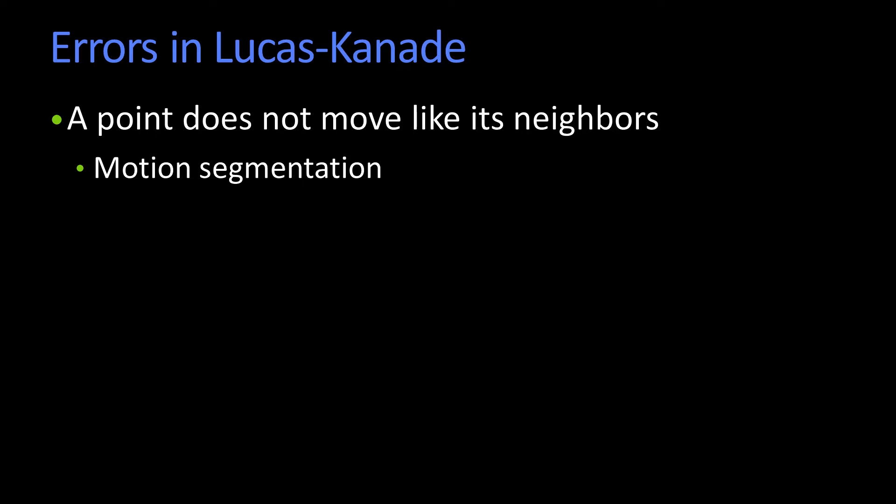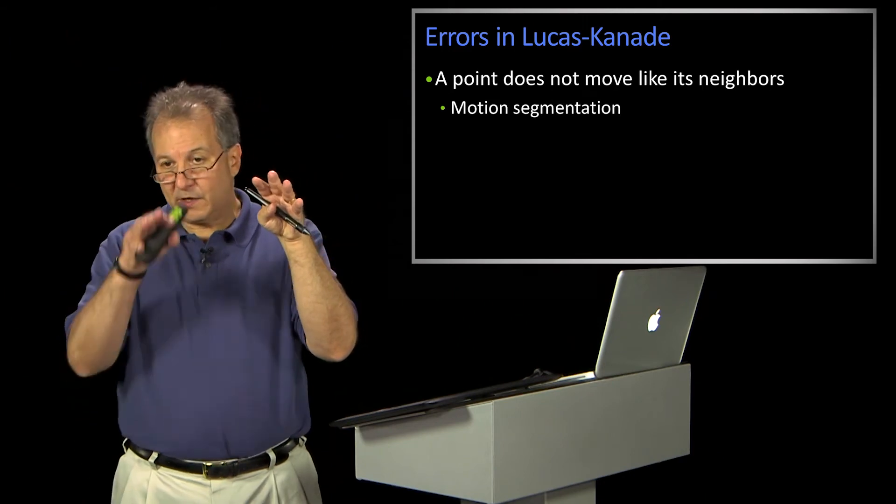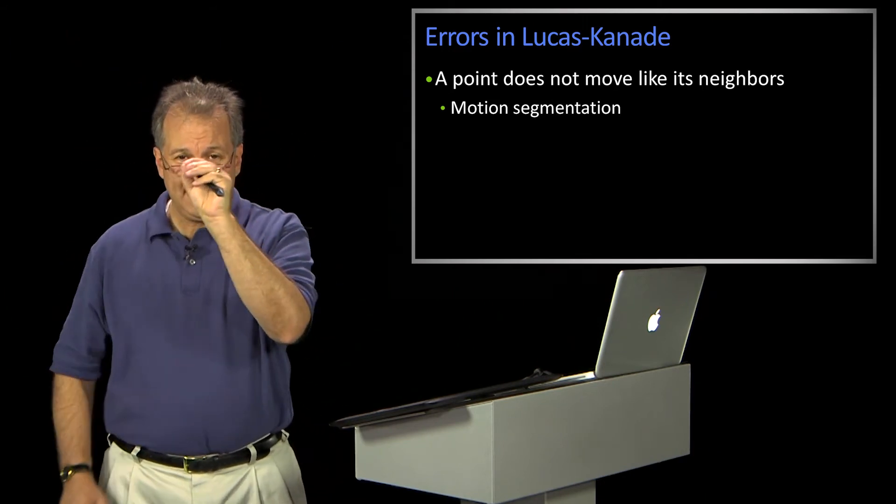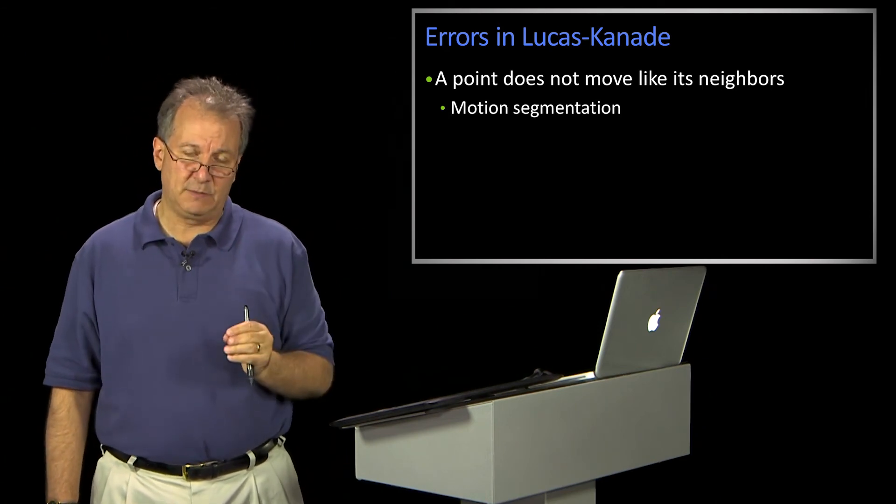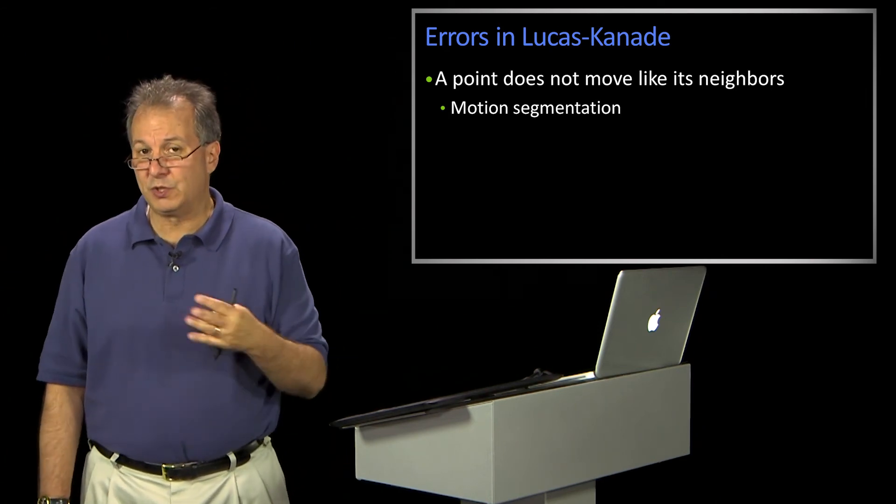The other thing we said is that possibly a bunch of points are moving one way, and another points are moving another way. So in that area, within a window, you don't actually have all the points moving in the same direction. And you have to solve that with motion segmentation.